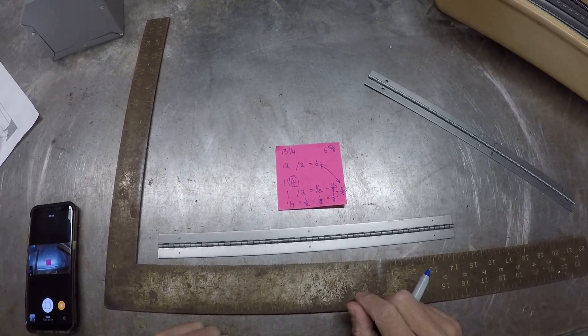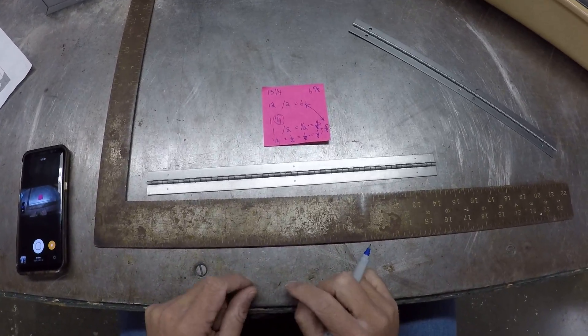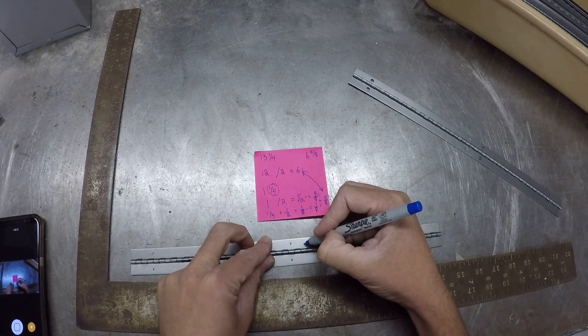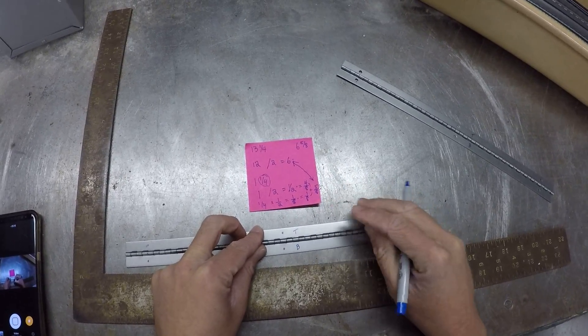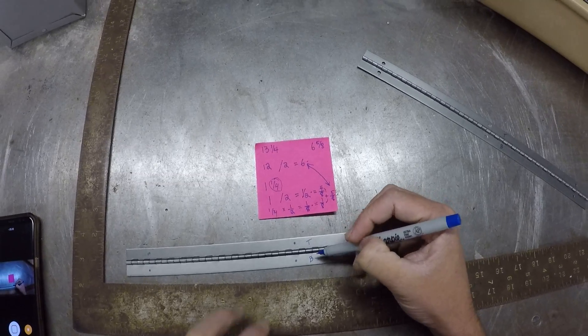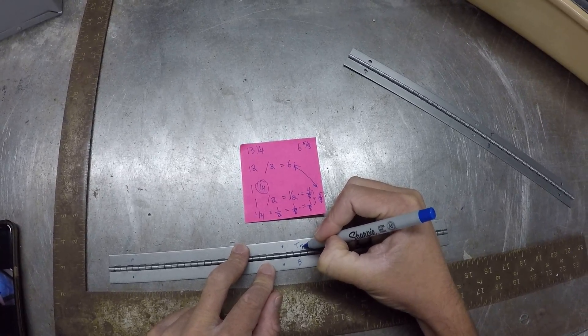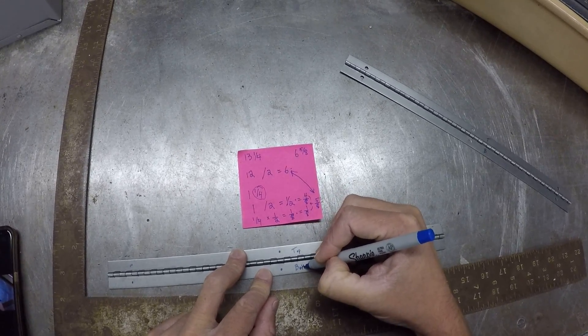I also want to get some labels, kind of like we did with the ends before. I want to label this a T and this a B. Top and bottom. If you want to write top and you want to write bottom, go for it.